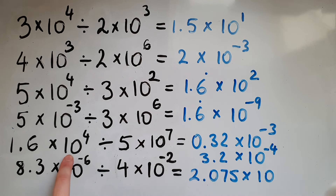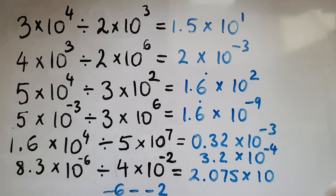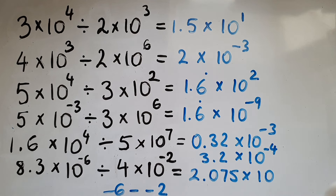8.3 divided by 4 gives us 2.075 times 10 to the power of negative 6. 6 take away negative 2 means we're getting negative 6 add 2 — imagine being overdrafted by 6 pounds and adding 2 to the count means you're only overdrafted by 4 pounds. So this is going to be negative 4.